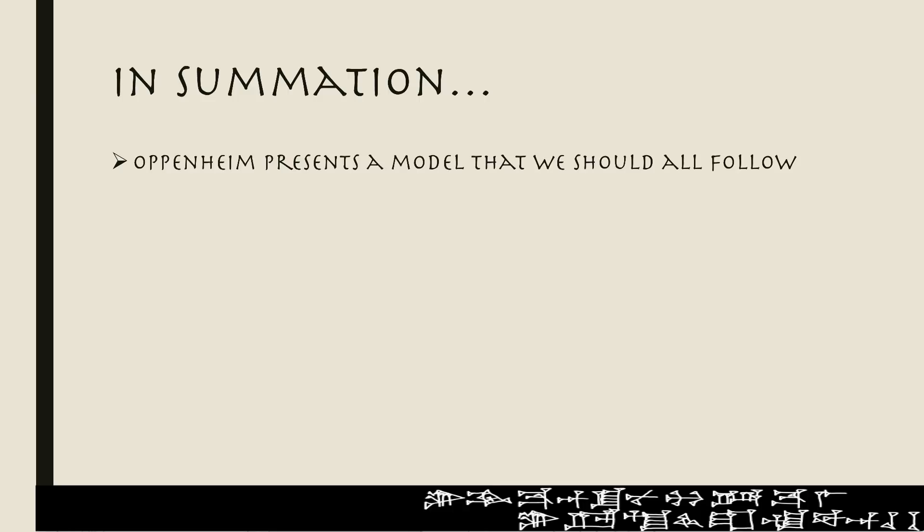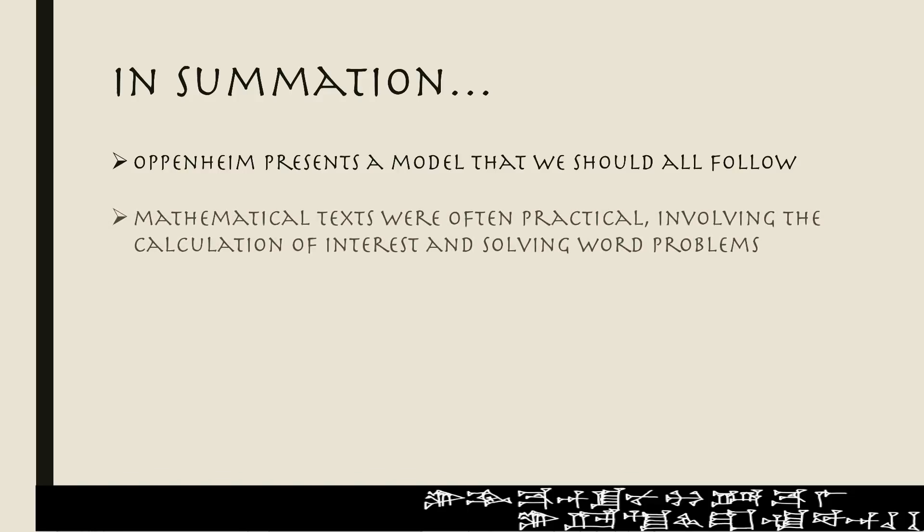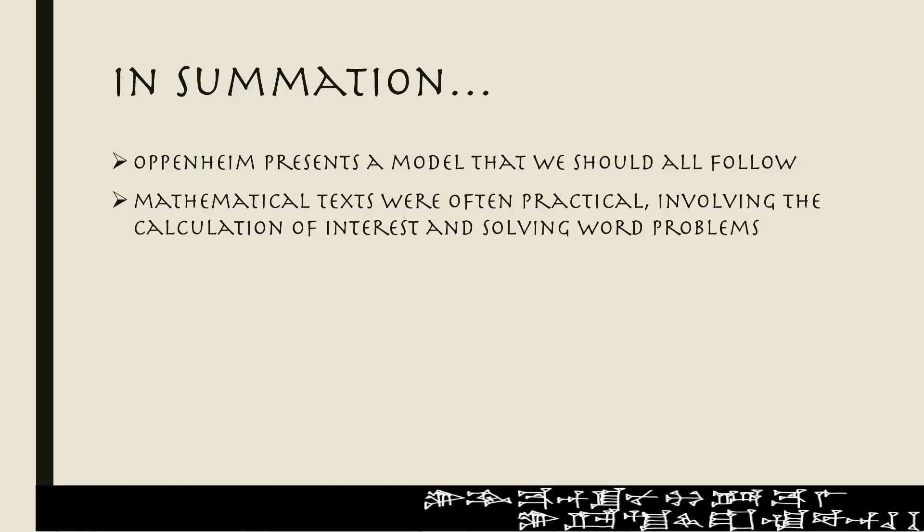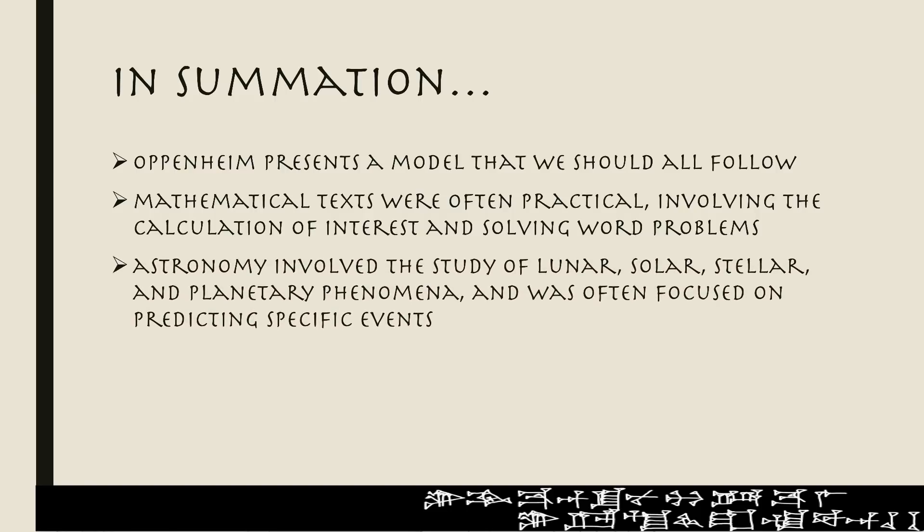Very briefly in summation: Oppenheim presents a model that we should all follow — stay in your lane, essentially, when it comes to making bold and definitive assertions about particularly controversial or complex subjects. Mathematical texts were often practical, involving the calculation of interest and solving word problems. Astronomy involved the study of lunar, solar, stellar, and planetary phenomena, and was often focused on predicting specific events.